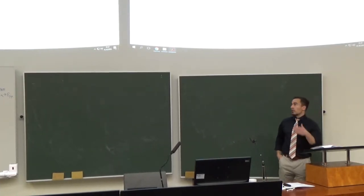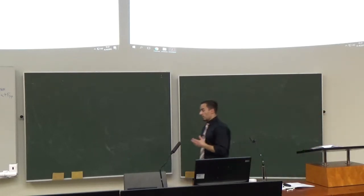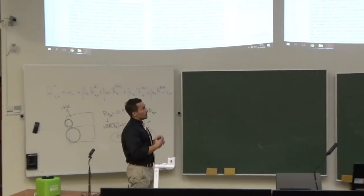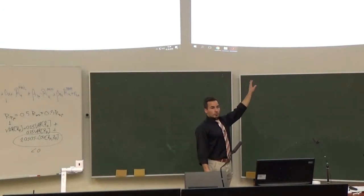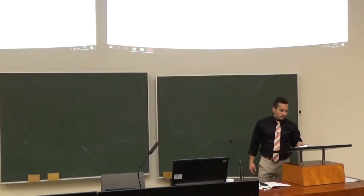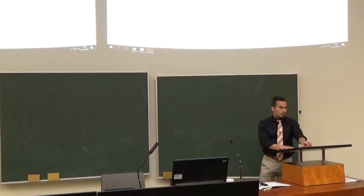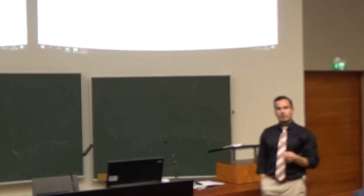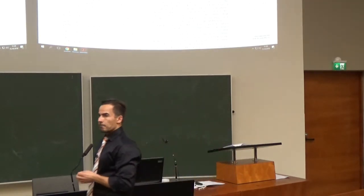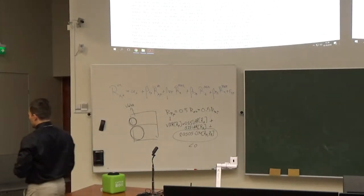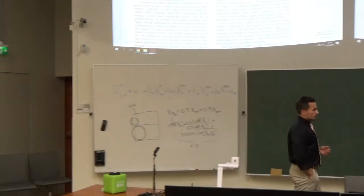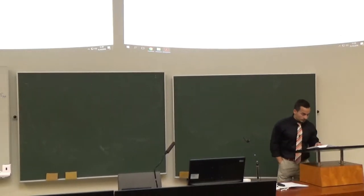Fama and French actually motivate their five-factor model paper in exactly the same manner — they merge this paper and some others and use this same equation. It's a very general setup. Whenever you do something in your master's thesis, you need to make sure it's also theoretically motivated and there's a link to the economic literature. You cannot just have an idea and try to figure something out — there must be a theoretical reason for why you do what you do.